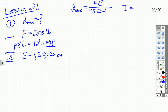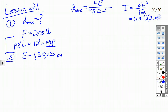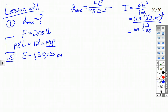The moment of inertia for the cross section we have is base times height cubed over 12. Why 12? Take calculus and work through the derivation. Our base, as I intended, was 1.5 inches, and the height was 3.5 inches. So the moment of inertia is 1.5 × 3.5³ divided by 12, which gives us 5.36 inches to the fourth.